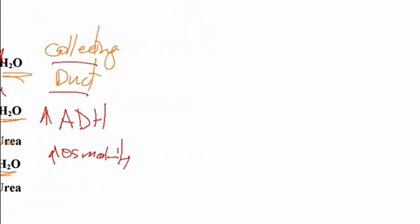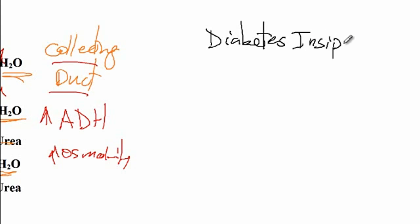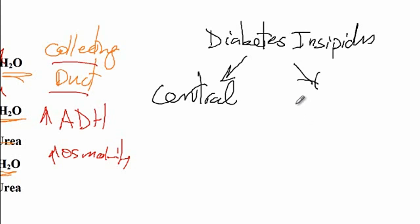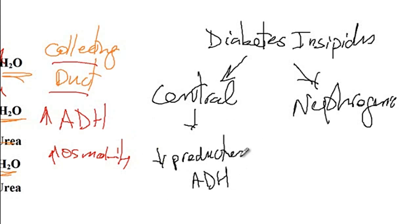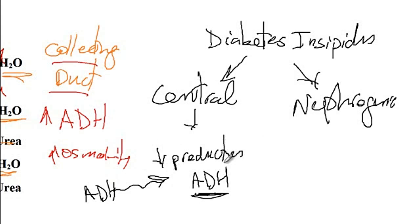If there is a lack of ADH function, that is referred to as diabetes insipidus, which is divided into two types: central versus nephrogenic. In central diabetes insipidus, there is a problem with the production of ADH from the posterior pituitary gland — the kidneys function properly and respond to ADH, but there is no ADH produced. If you administer ADH to these patients it will correct urine osmolarity, making urine more hypertonic.